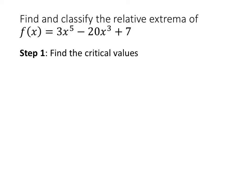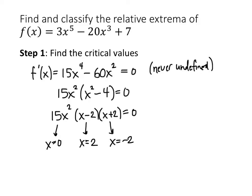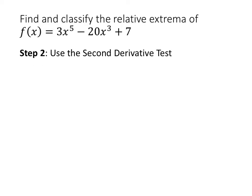Our first step will be to find all the critical values. We'll take the derivative, set it equal to zero, and solve. We'll also think about any points where that derivative might be undefined. The derivative we get is 15x to the 4th minus 60x squared. We set that equal to zero, and since that's a polynomial, there's no place where it will be undefined. Solving this equation we get three critical values: 0, 2, and negative 2. Now we'll use the second derivative test to test those three critical values.